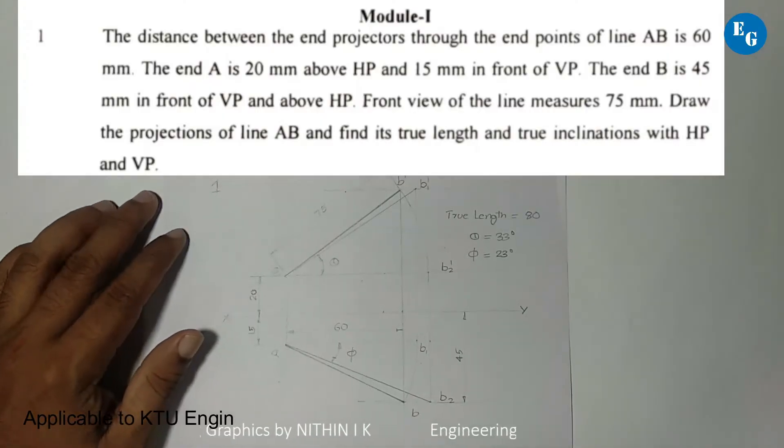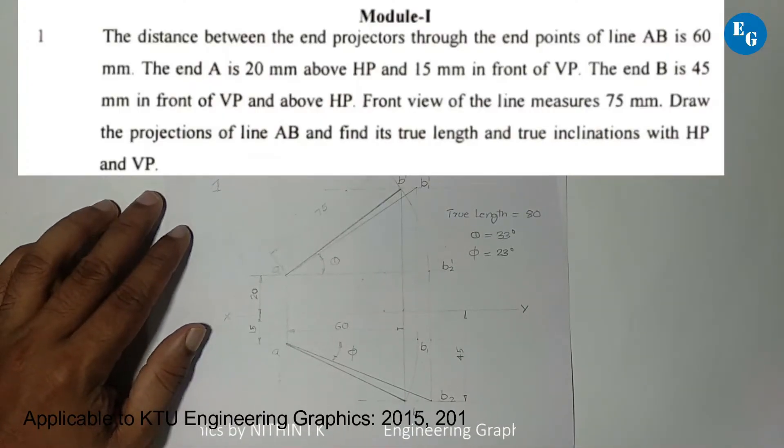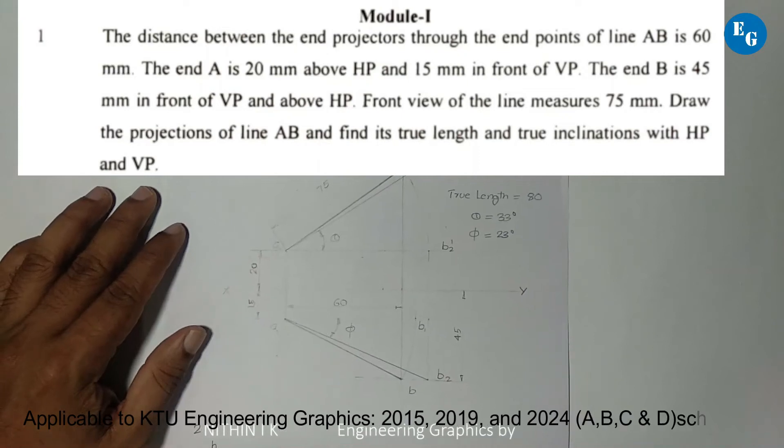The distance between end projectors through the end points of line AB is 60 mm. The end A is 20 mm above HP and 15 mm in front of VP. The end B is 45 mm in front of VP and above HP. Front view of the line measures 75 mm.